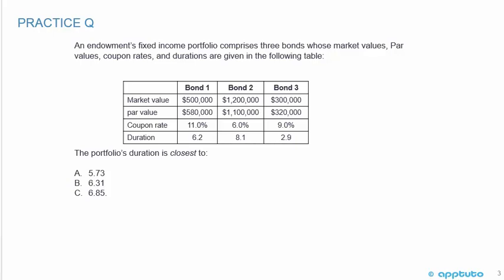We'll do three practice questions, all calculations, to finish this LOS. The first: an endowment's fixed income portfolio comprises three bonds. Bond one has a market value of $500,000, par value $580,000, coupon 11%, duration 6.2. Bond two has a market value of $1.2 million, par value $1.1 million, coupon 6%, duration 8.1. Bond three has a market value of $300,000, par value $320,000, coupon 9%, duration 2.9.